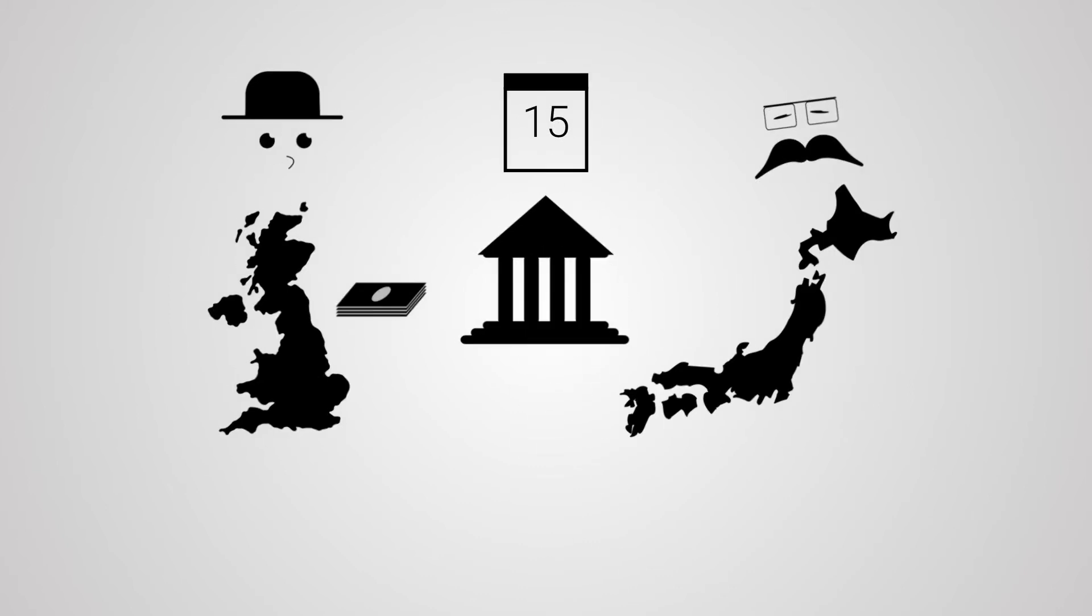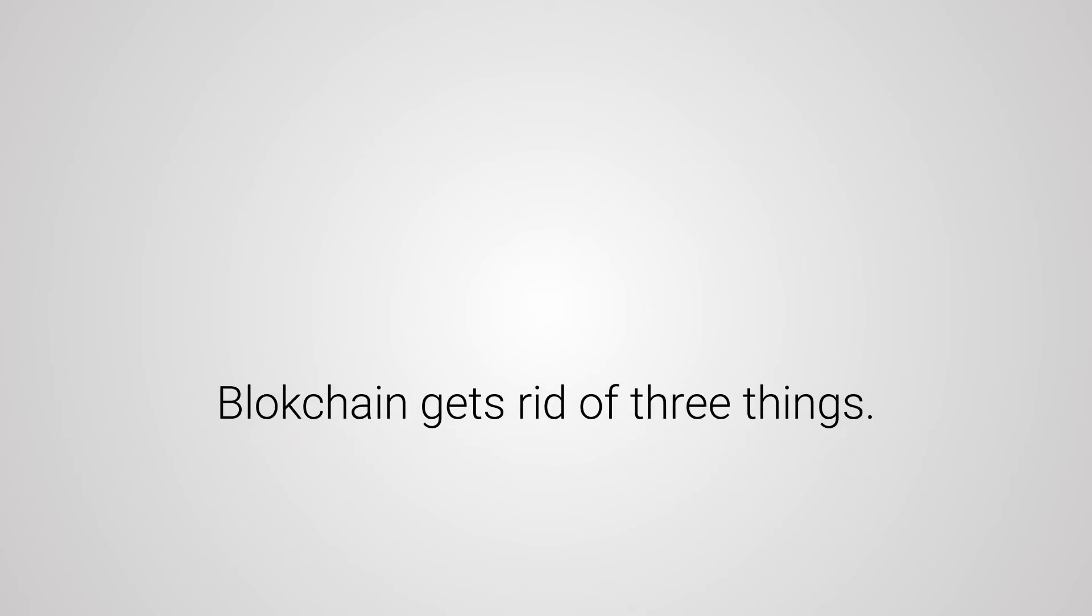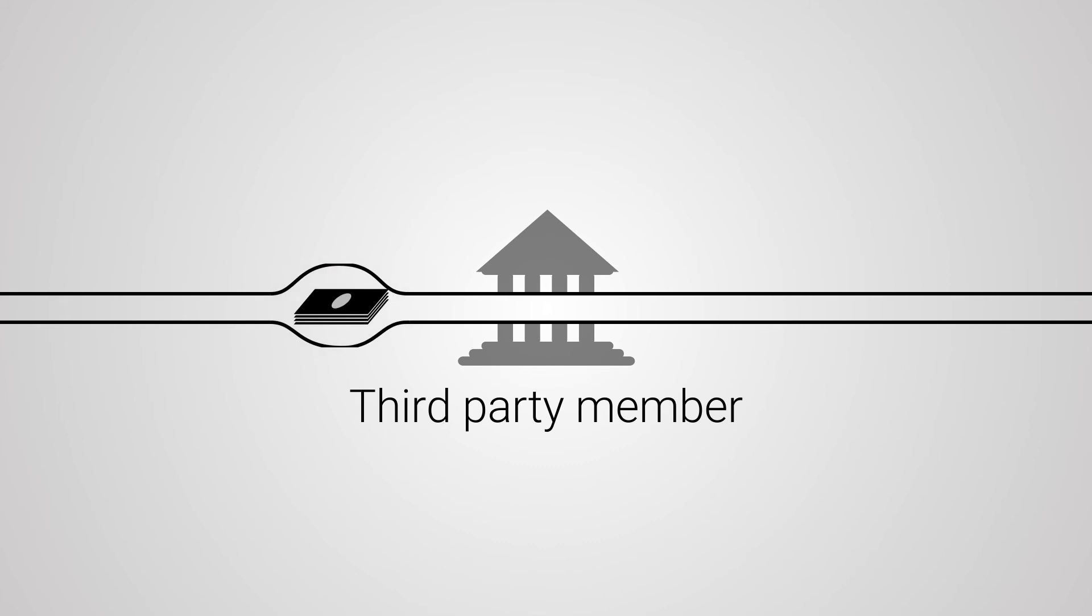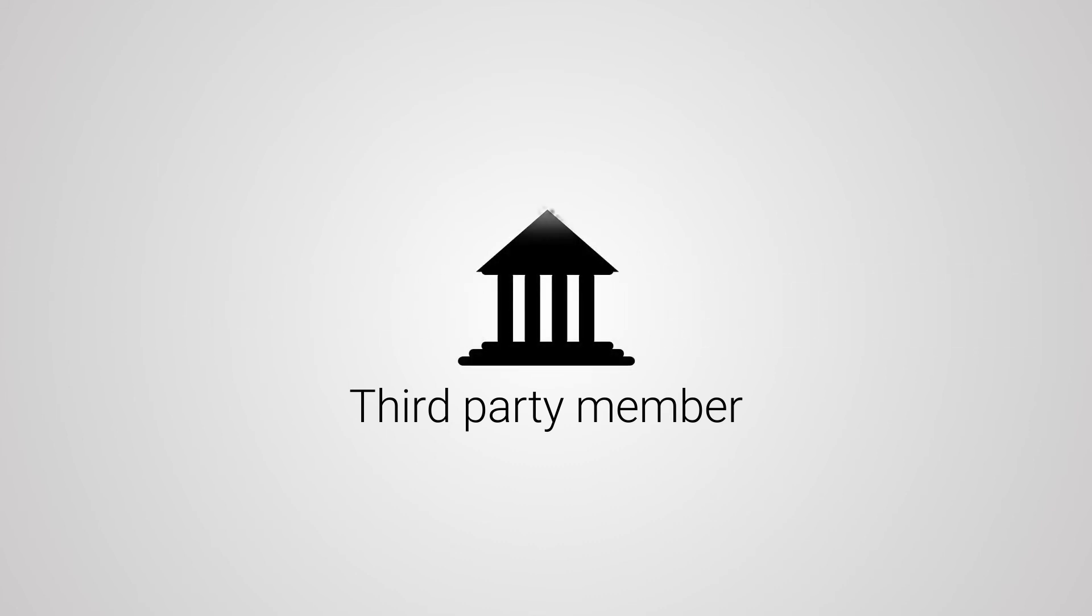Thanks to the blockchain, we can get rid of three things. The first one is the third-party member, like bank, who controls what happens with your funds. The blockchain technology allows John to send his payment directly to Yuki without anyone who has to hold their money in between.